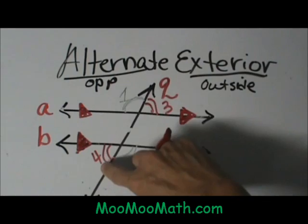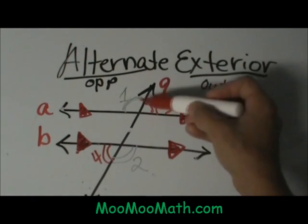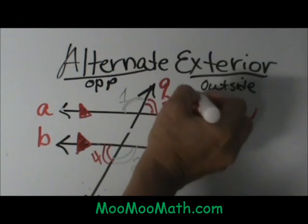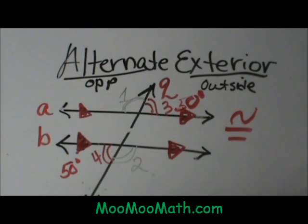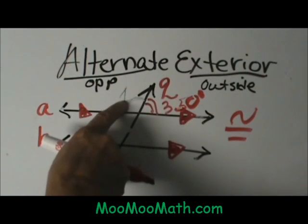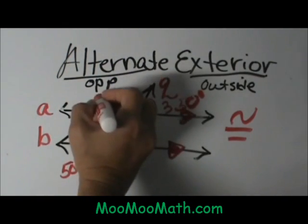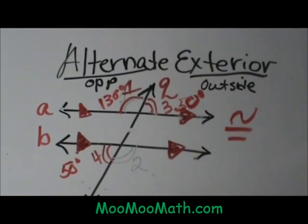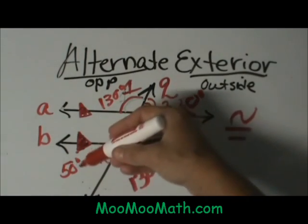When you have parallel lines and a transversal, these alternate exterior angles are also congruent to each other. And these two angles are linear pairs. Let's say that angle three is 50 degrees. We know that angle four also has to be 50 degrees because alternate exterior angles are congruent. Now we can also figure out angles one and two. If angle three is 50, then one and three are linear pairs, meaning they're supplementary. So I take 50 and subtract it from 180 and I get 130 degrees. So angle one is 130 degrees, and angle two must also be 130 degrees because it's a linear pair with angle three.